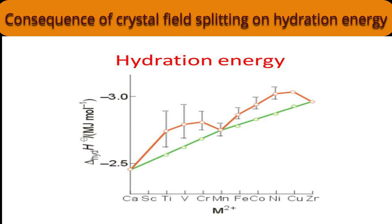The second half of the transition series starts with Fe²⁺ (d⁶). An electron enters the t2g orbital, stabilizing the system; CFSE is −0.4Δo. Therefore, compared to Mn²⁺, Fe²⁺ has larger hydration energy. Co²⁺ (d⁷) adds another electron to t2g; CFSE is −0.8Δo, further increasing stability and hydration energy. Ni²⁺ (d⁸) adds yet another electron to t2g; CFSE is −1.2Δo. Compared to Co²⁺, Ni²⁺ is more stable, releasing more energy. Ni²⁺ represents the peak hydration energy in the second half — it is the d⁸ configuration.